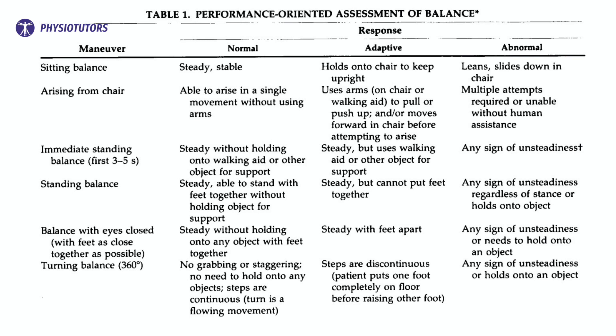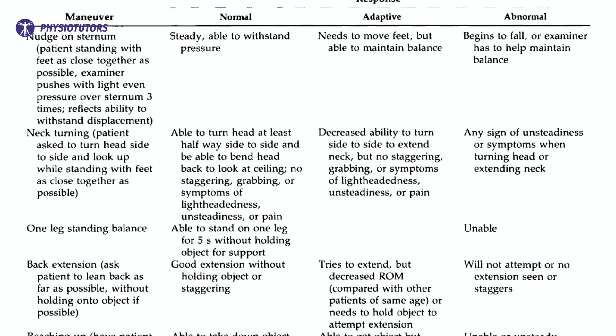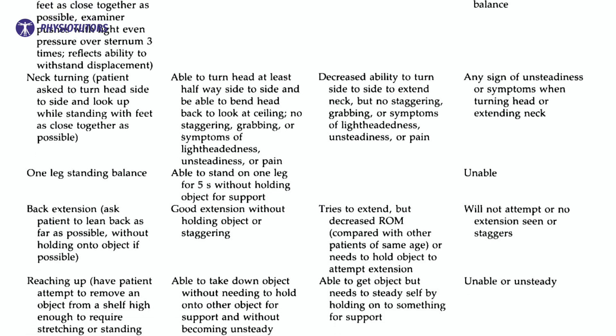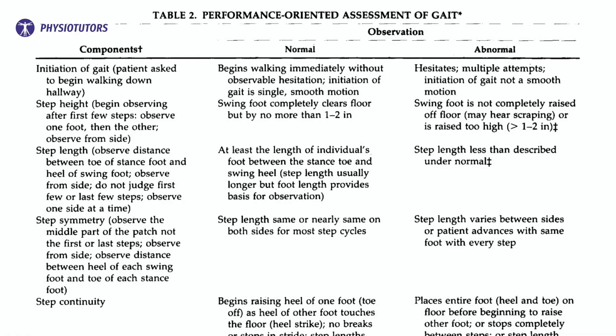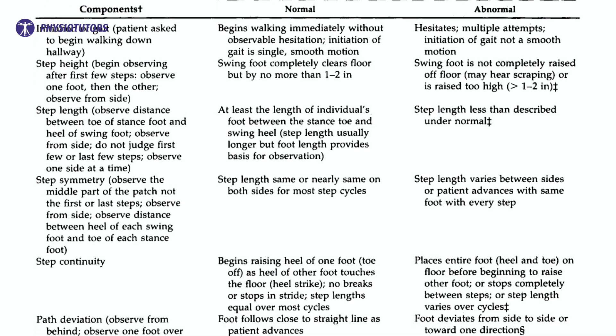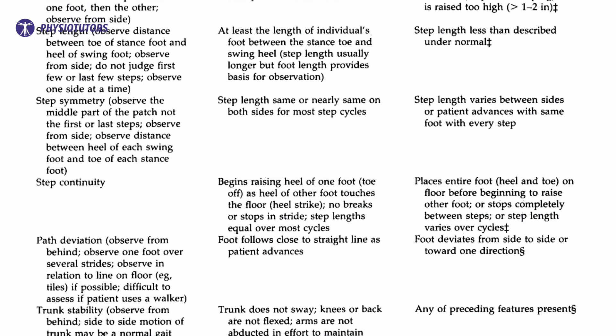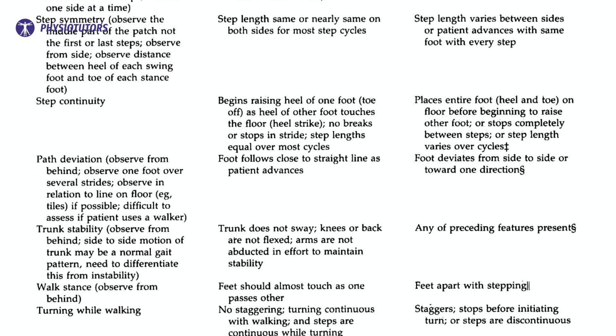Part one covers balance with a total of 16 points. You, the clinician, will assess different items such as sitting balance, attempts to rise, standing balance, and turning. Every item is given 0, 1, or 2 points. The second part covers gait with a total of 12 points, including step symmetry, path, and trunk sway. Points are assigned per item, and your patient will score a maximum of 28 points with both parts combined.